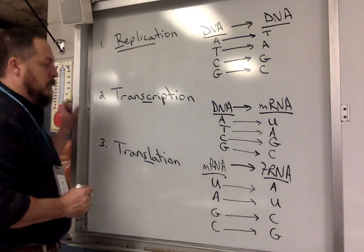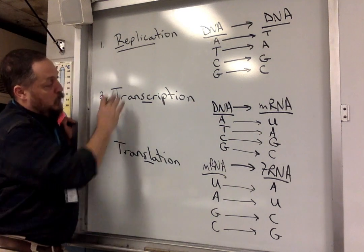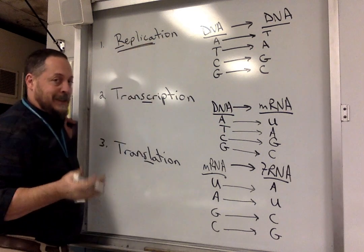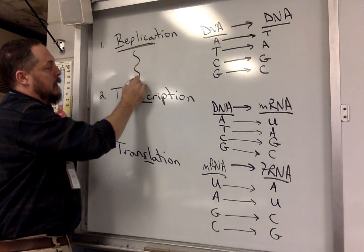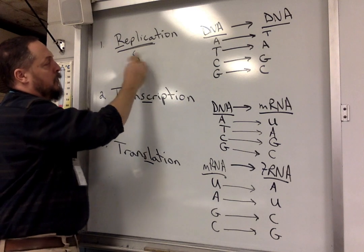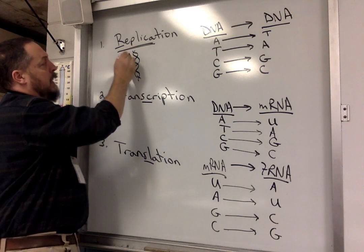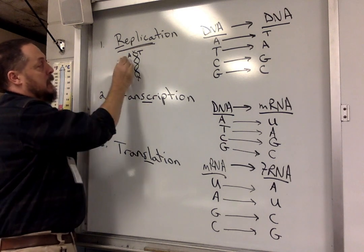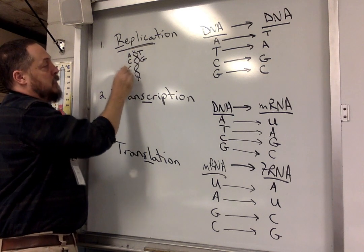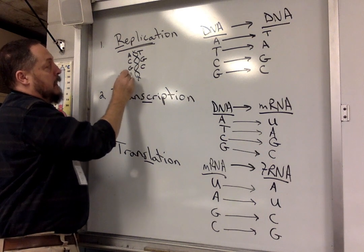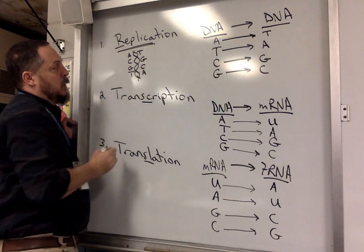Why is it called replication? Replica means an exact copy. Let's say we have a DNA strand and it unzips. Normally the DNA is a double helix — if we have an A on one side, we have a T on the other; C on one side, G on the other. The DNA uncoils to allow copying.